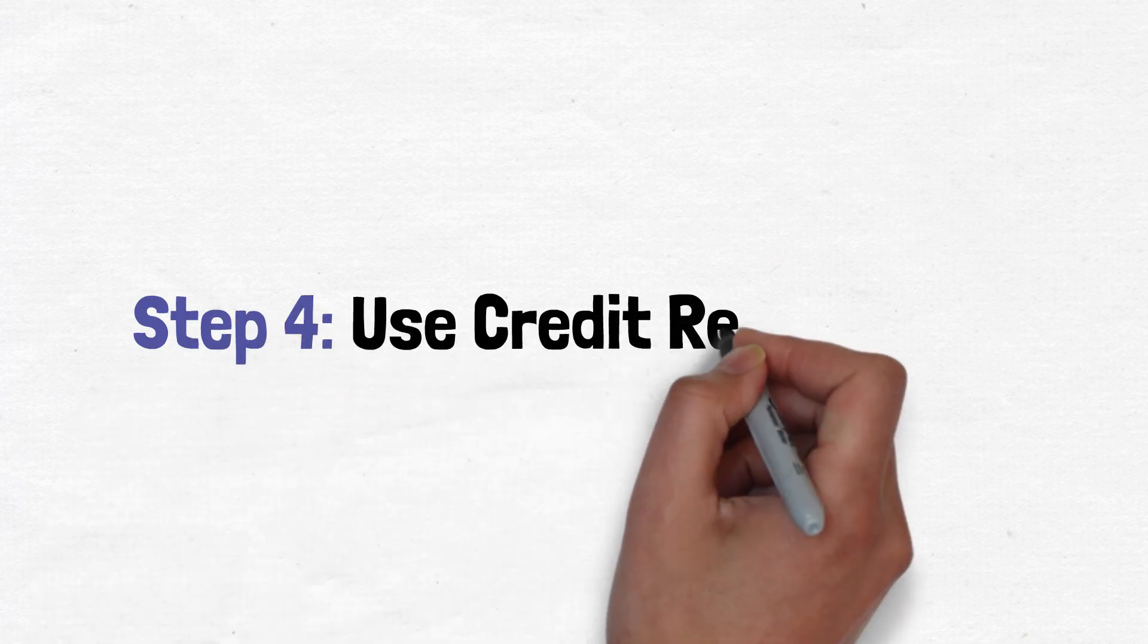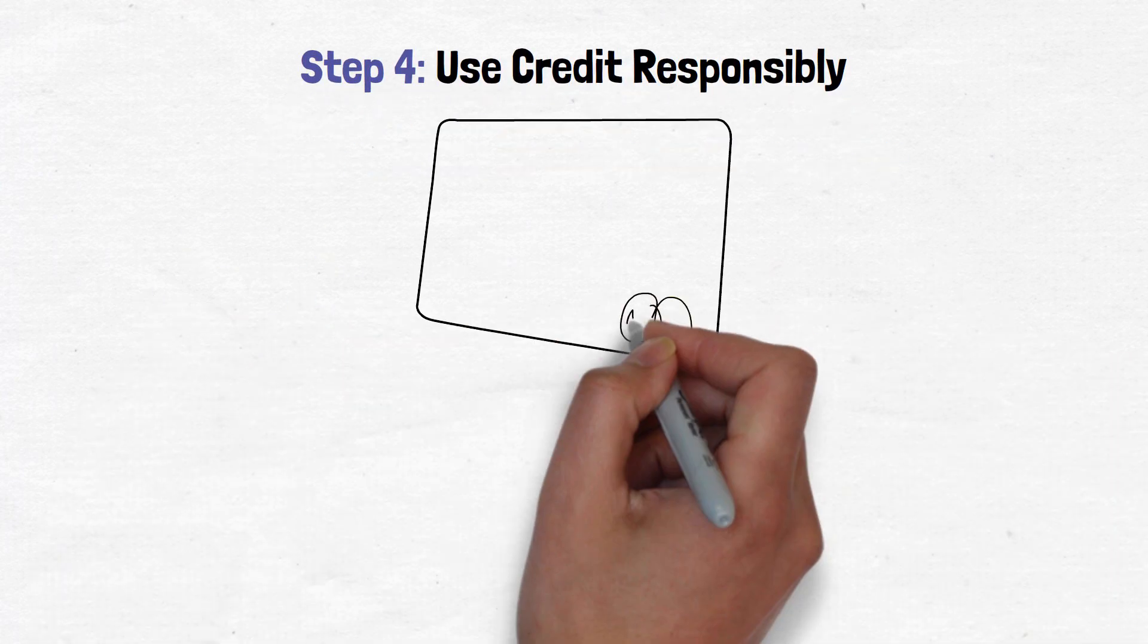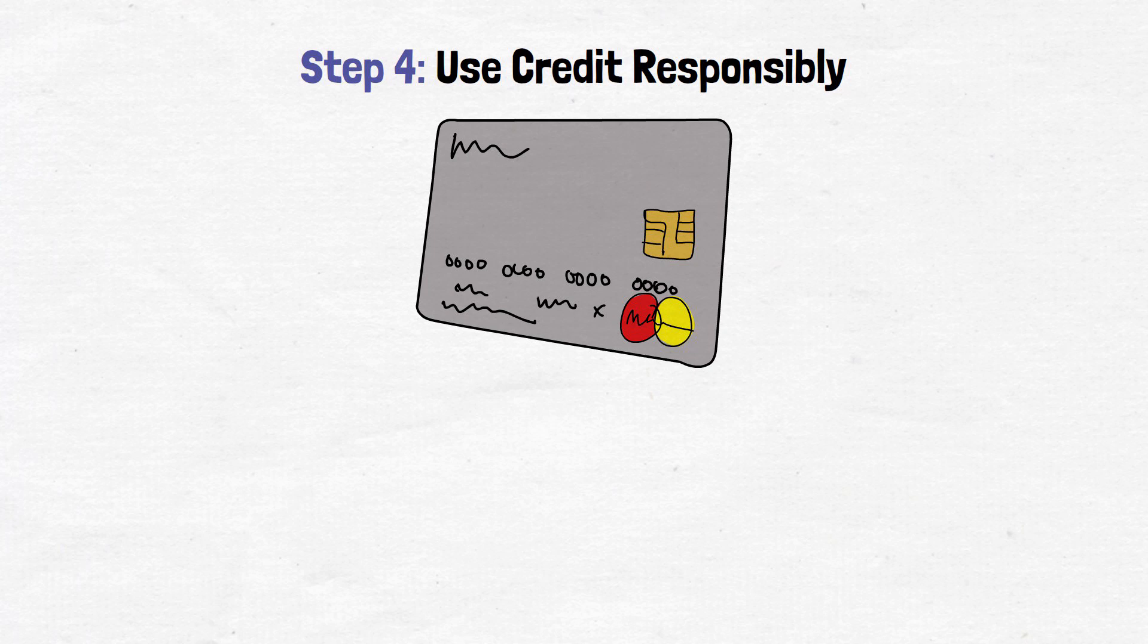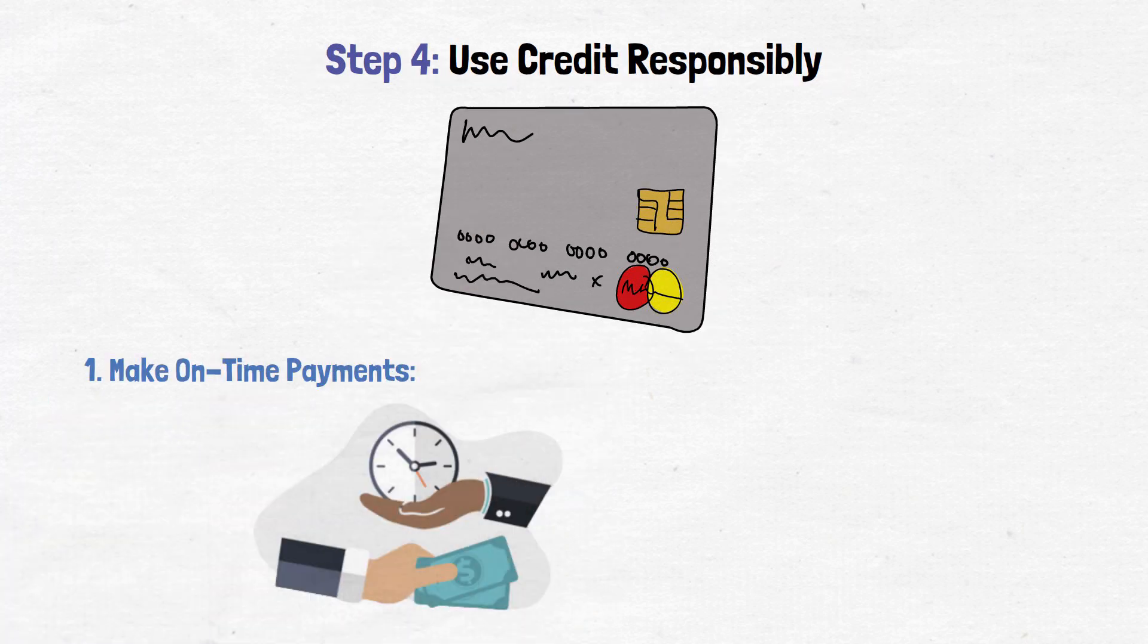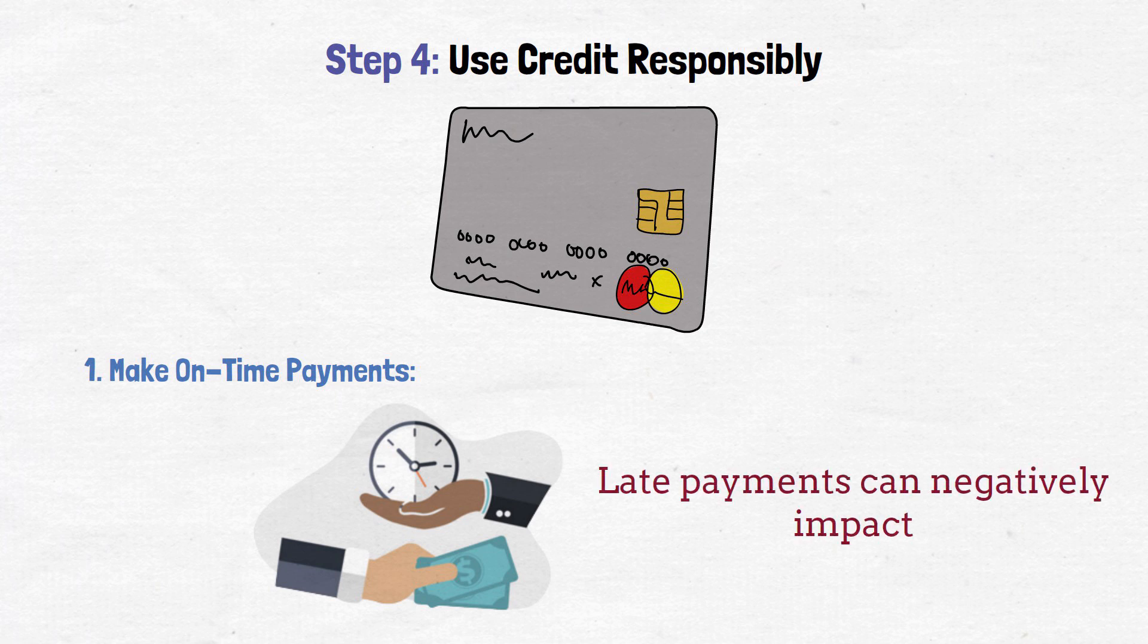Step 4: Use credit responsibly. Once you have a credit card, it's crucial to use it responsibly. Make on-time payments: Always pay at least the minimum payment on time. Late payments can negatively impact your credit score.